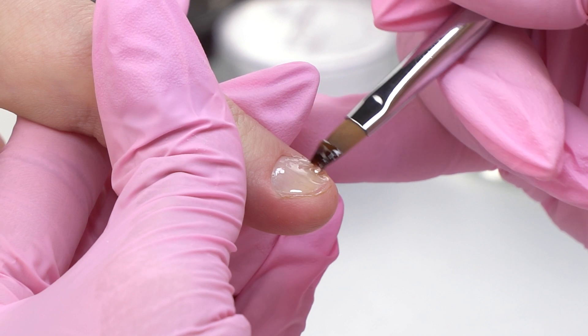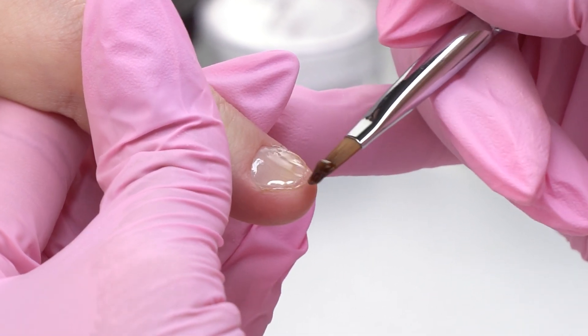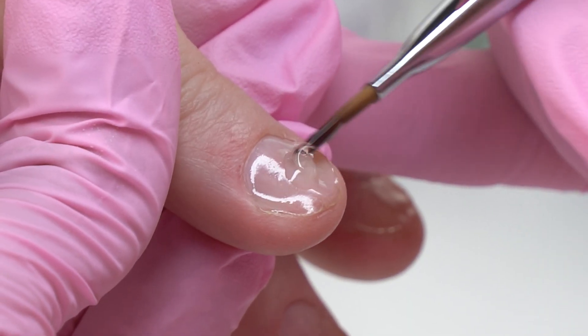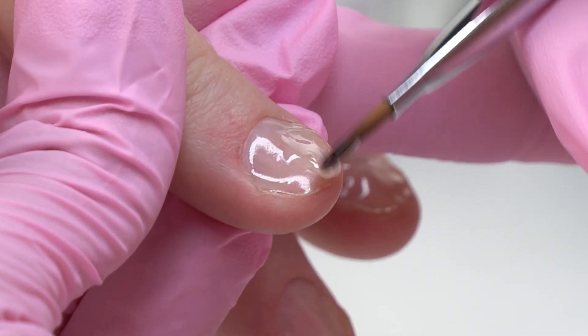I'm filling in the dents with a high viscosity gel. It's clear, so it won't be noticeable, but the nails will be even. Using thick gels is super convenient.